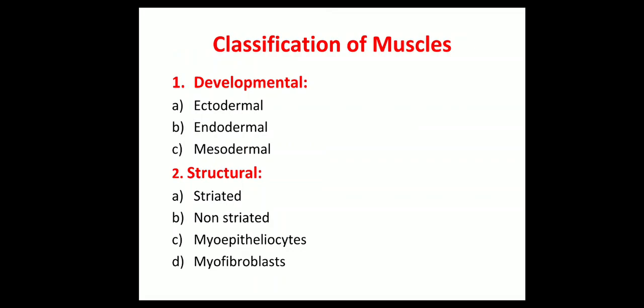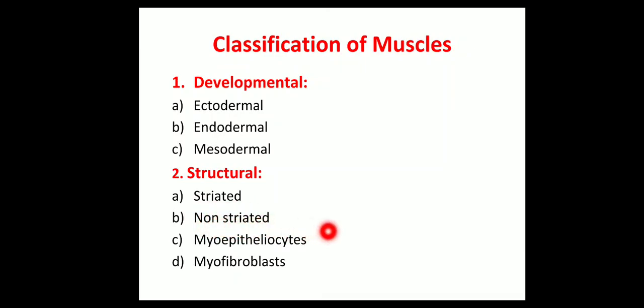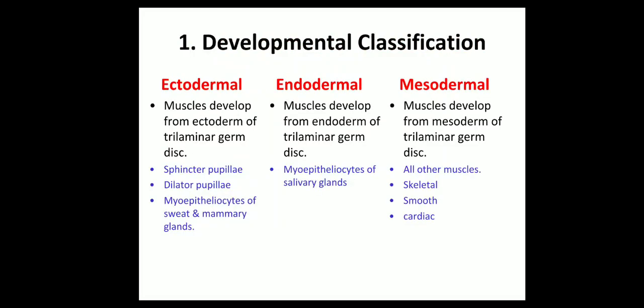How will you classify muscles? The classification of muscles: number one there is the developmental classification and the structural classification. In the developmental classification there are ectodermal muscles, endodermal muscles, and mesodermal muscles. In the structural classification there are striated muscles, non-striated muscles, myoepitheliosites, and myofibroblasts.